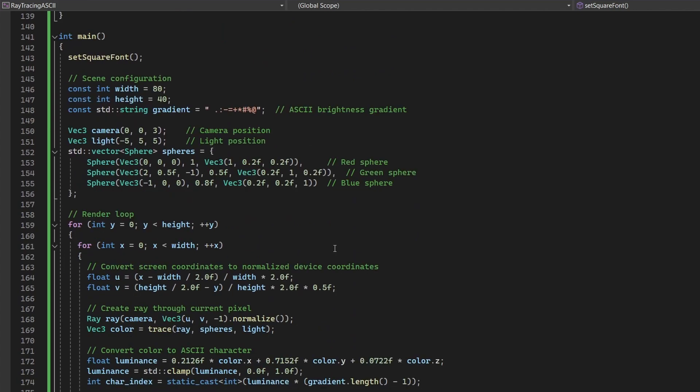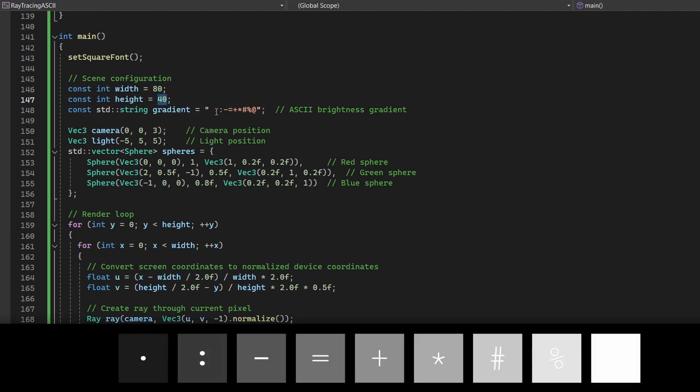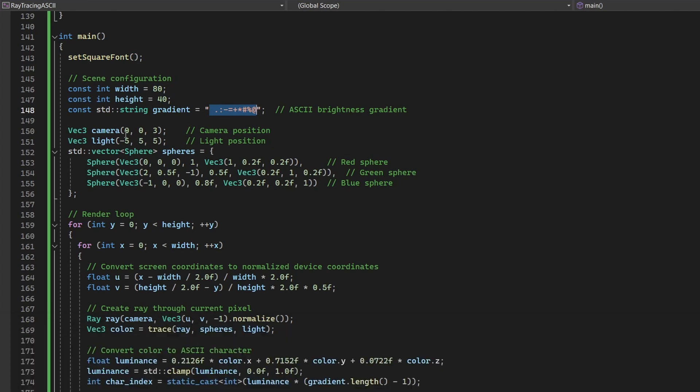Main function orchestrates the rendering process. It initializes the console font using setSquareFont. The rendering canvas is configured as an 80 times 40 grid. A gradient string is defined to map luminance values to ASCII characters. The scene is set up with a camera position at (0, 0, 3), a light source at (-5, 5, 5), and three spheres with defined positions, sizes, and colors.